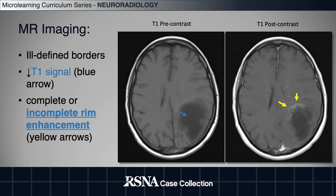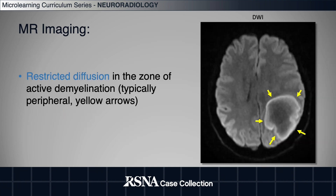Lesions also have ill-defined borders, decreased T1 signal, and complete or incomplete rim enhancement on contrast-enhanced sequences. Restricted diffusion is seen in the zone of active demyelination, which is typically peripheral.